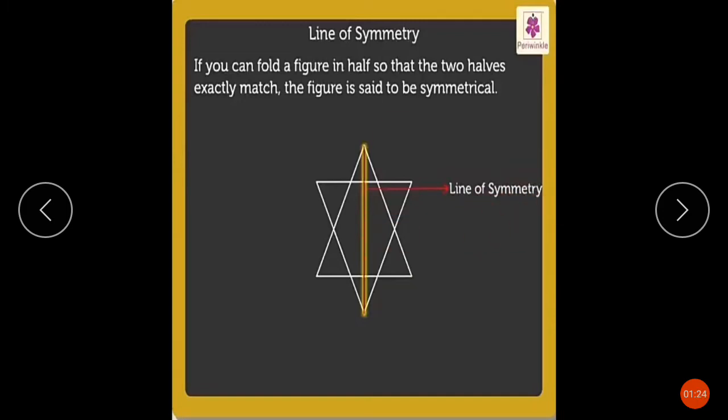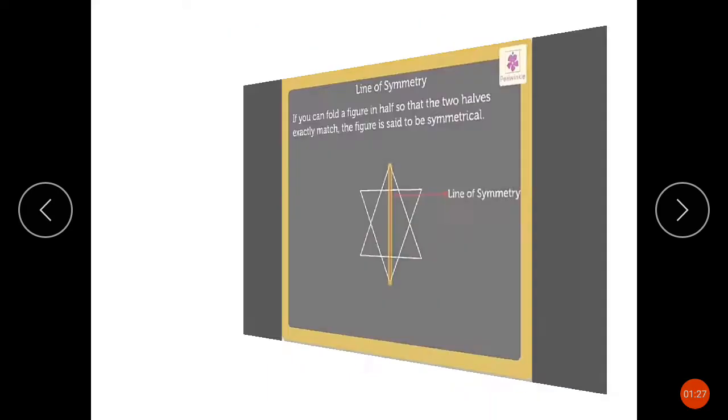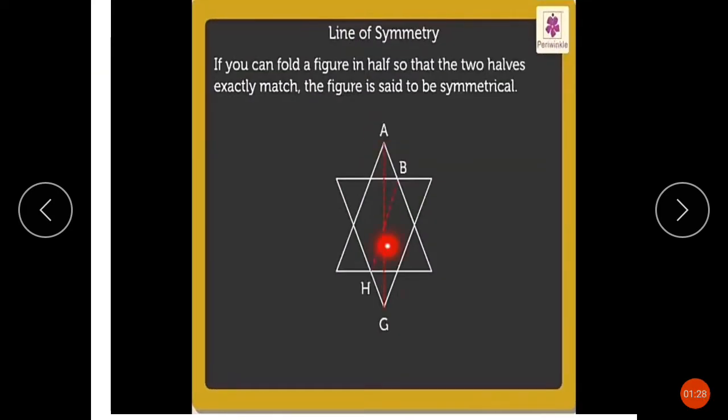Line AG is one such line of symmetry. The others are line BH, line CI, line DJ, line EK, and line FL.